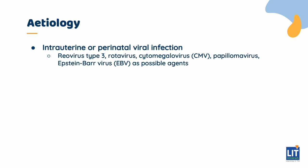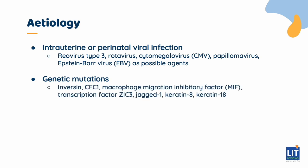Though the disease is not an inherited disorder, several genetic mutations have been identified as possible etiologies. For example, mutations of the CFC1 gene, which is involved in left-right axis determination in humans, have recently been identified in a few patients with syndromic biliary atresia.